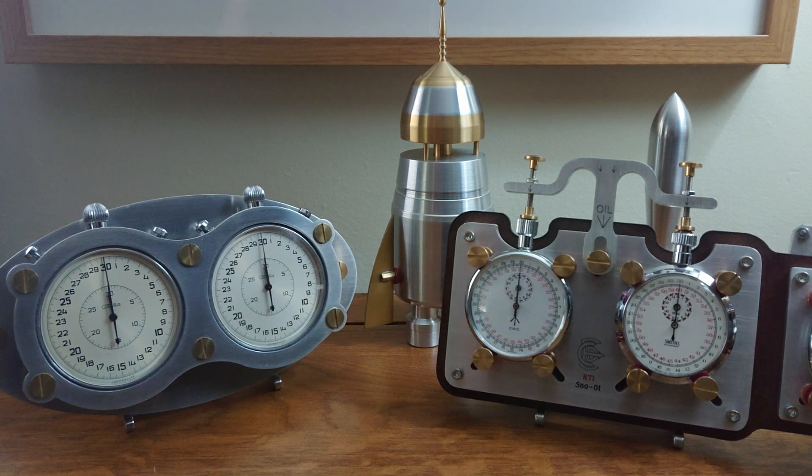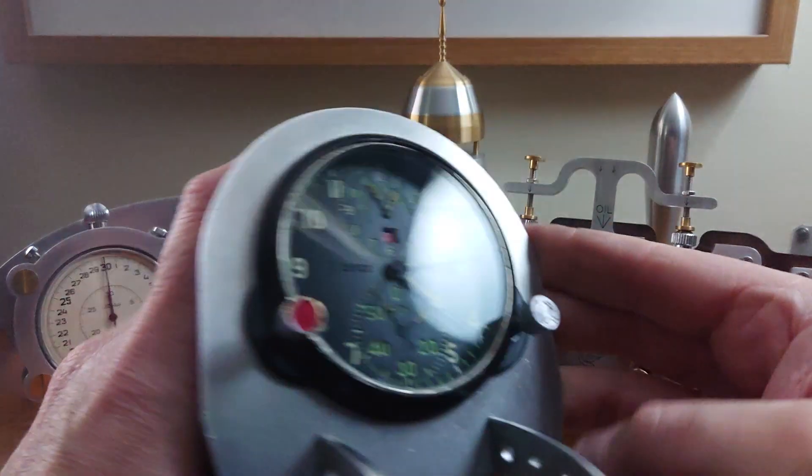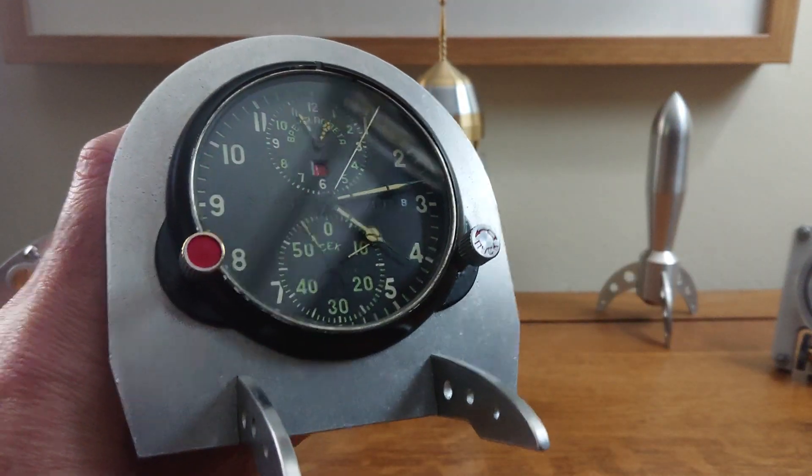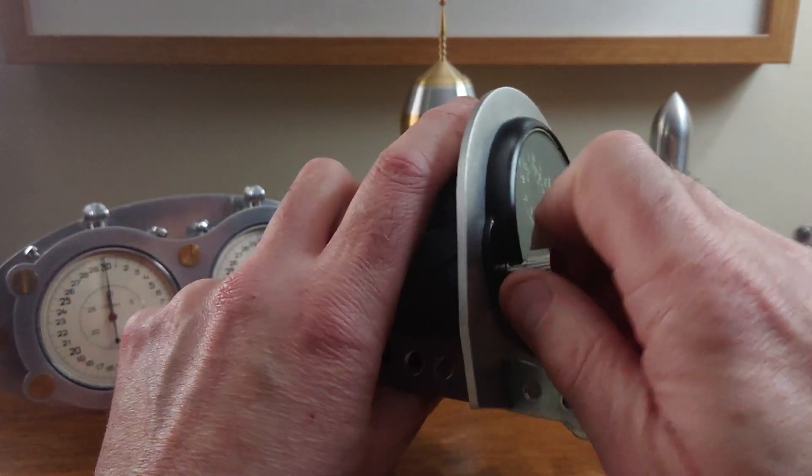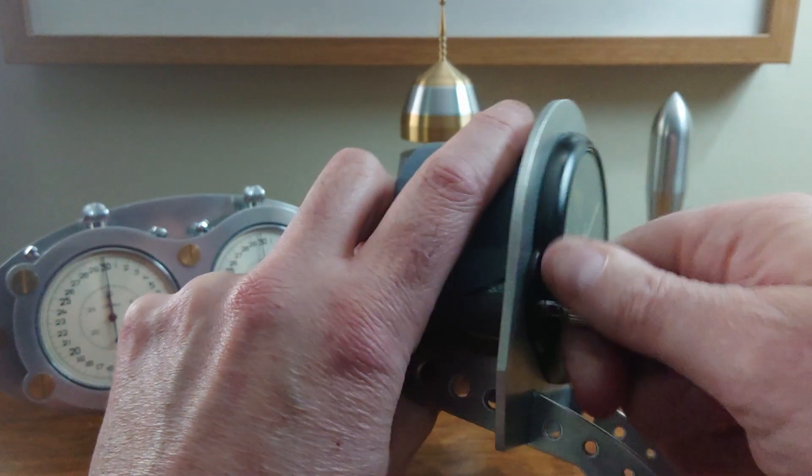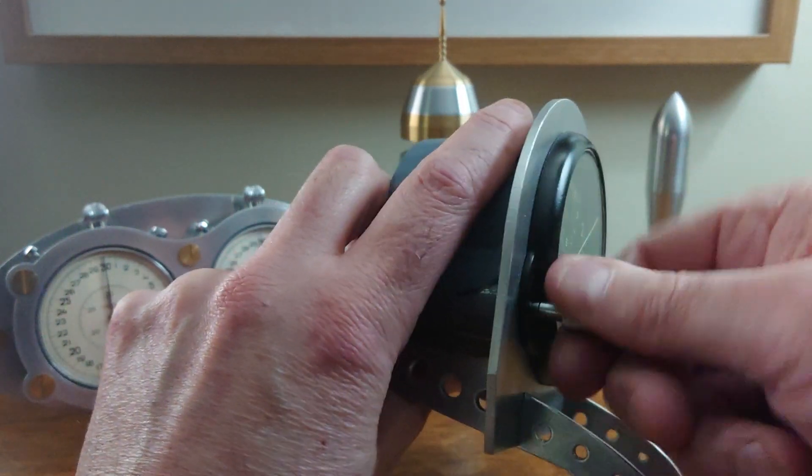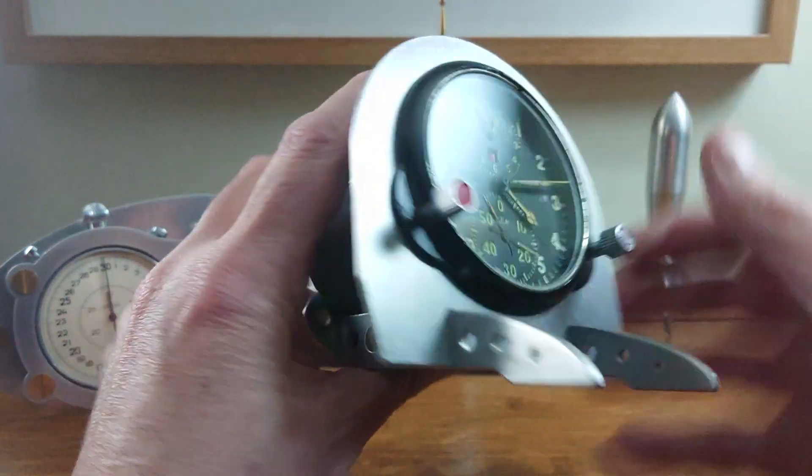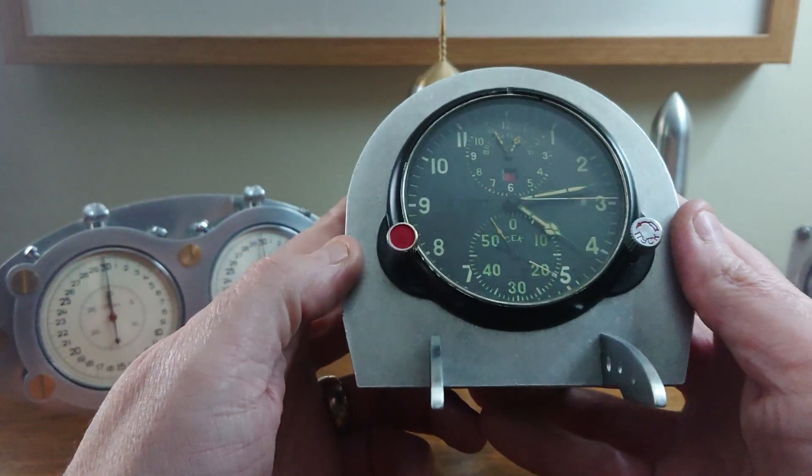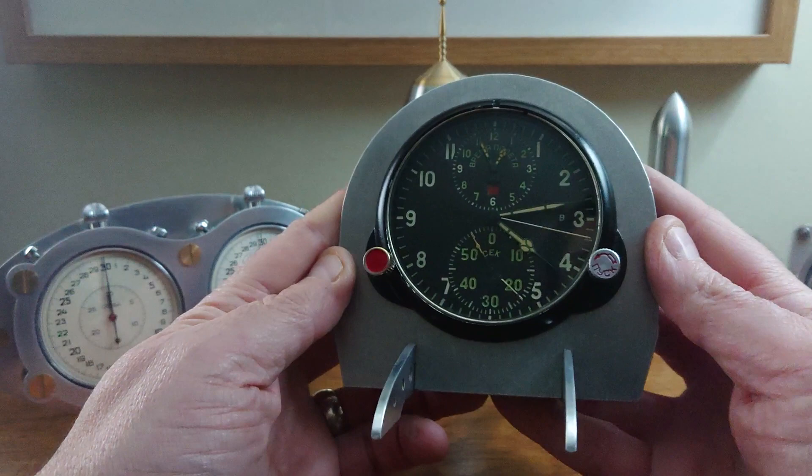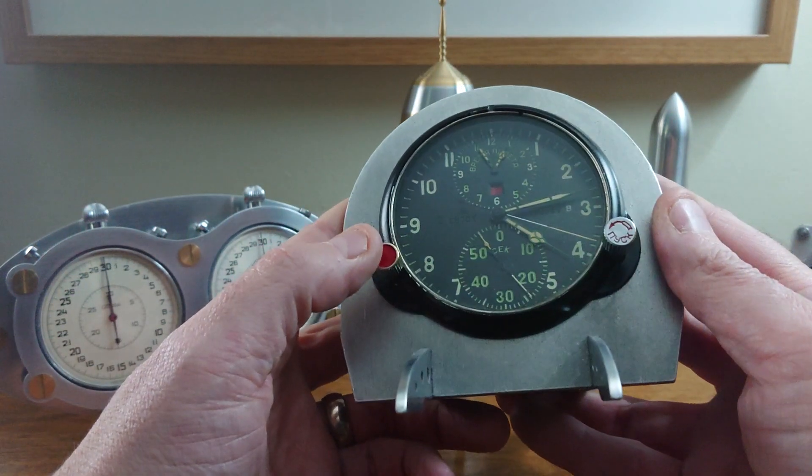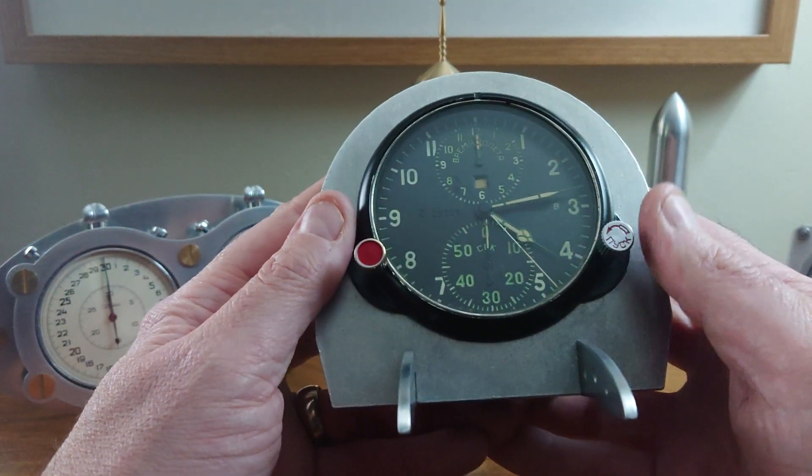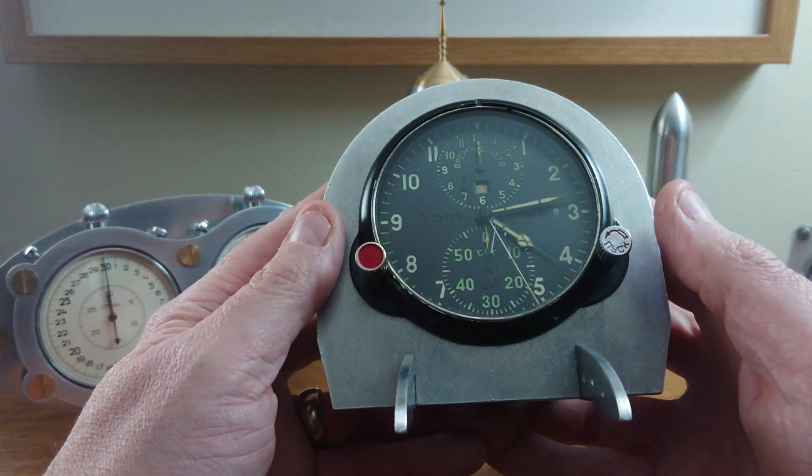This is a MIG clock. Bought this clock off eBay. These are fantastic. These are really cool clocks. I think you can probably pick these up for about 95 quid. There's a lot of Ukrainian sellers selling them. And again it does various things. Stopwatches, countdown.